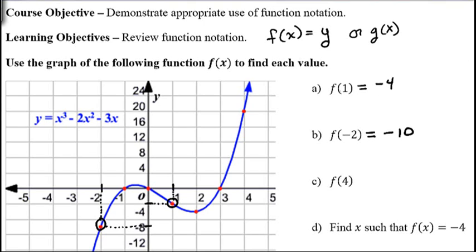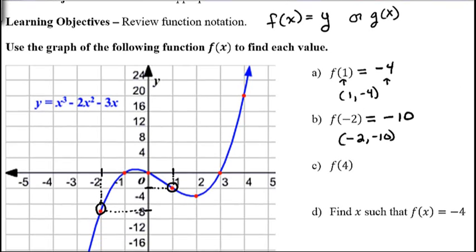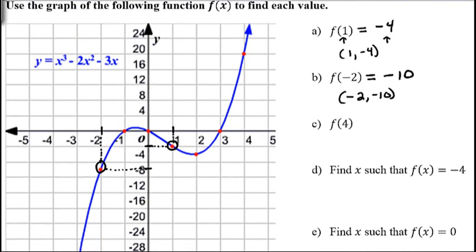We can also talk about what point this would be on the graph. So our x value is 1, and the y value is negative 4. So f of 1 equals negative 4 has the corresponding point 1, negative 4. Likewise, f of negative 2 equals negative 10 would have the corresponding point negative 2, negative 10. Just so that you make that connection between the function value and its corresponding point.